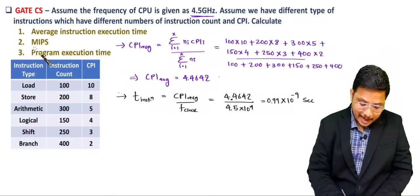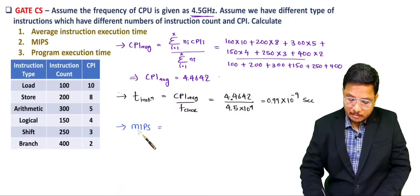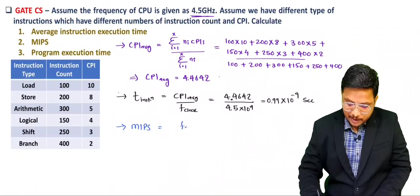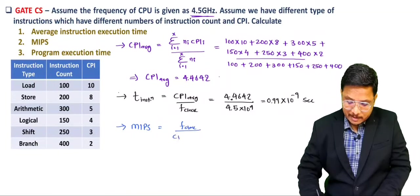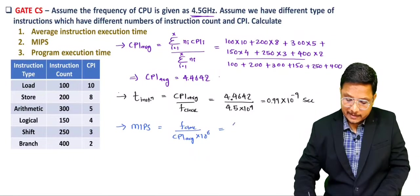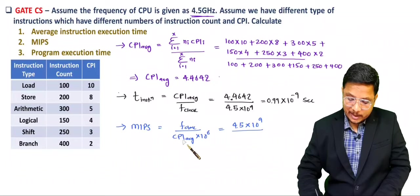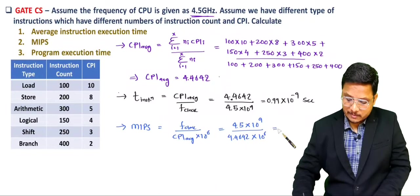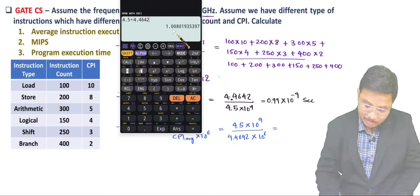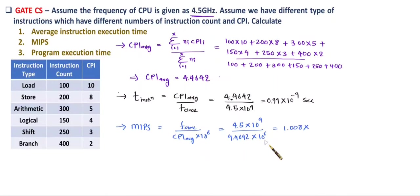Next, MIPS (millions of instructions per second) = clock frequency / (average CPI × 10⁶). So: (4.5 × 10⁹) / (4.4642 × 10⁶) = (4.5 / 4.4642) × 10³ = 1.008 × 10³ MIPS.